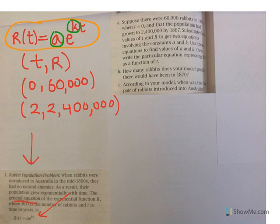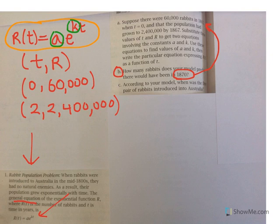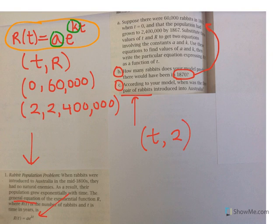After we do part a, we can do part b: how many rabbits does your model predict there would have been in 1870? 1870 is 5 years after 1865, so we would substitute 5 for t in our model and solve for the number of rabbits. In part c, according to your model, when was the first pair of rabbits introduced into Australia? In other words, for what year was the population equal to 2? It's going to be before 1865 because by 1865 there were already 60,000 rabbits, so we'll get a negative value for t interpreted as the number of years before 1865.